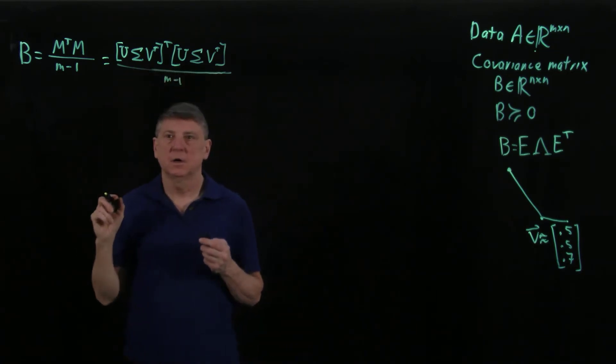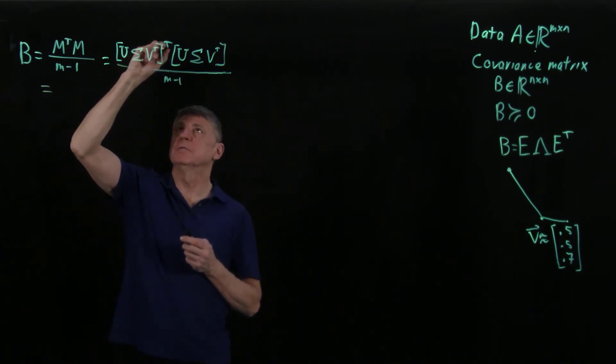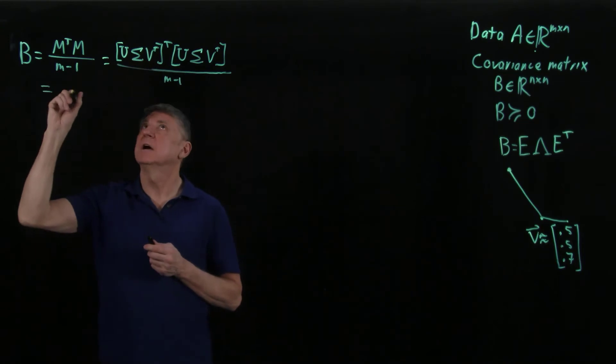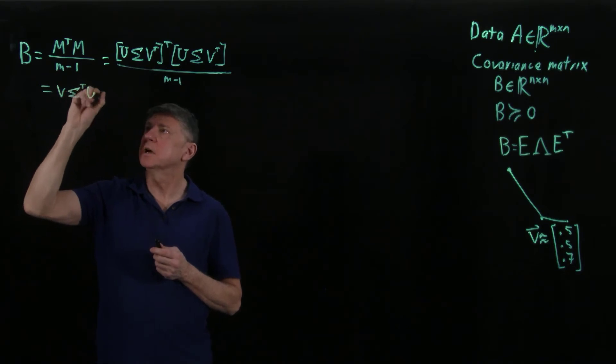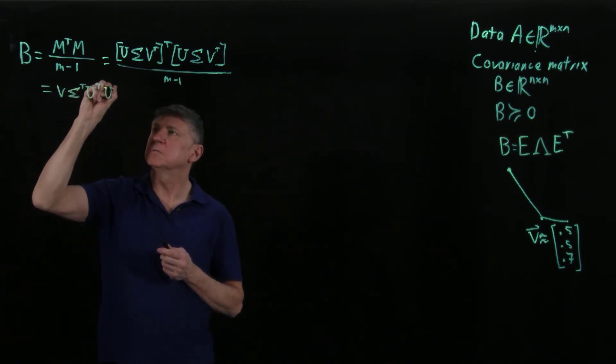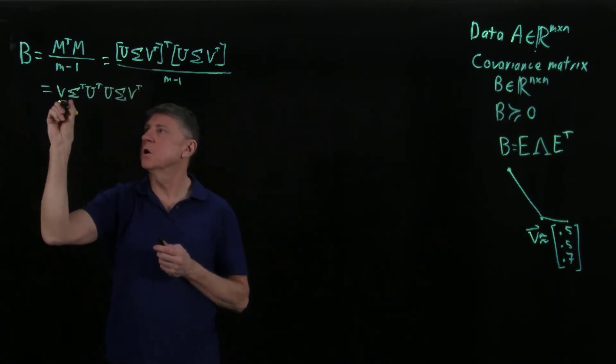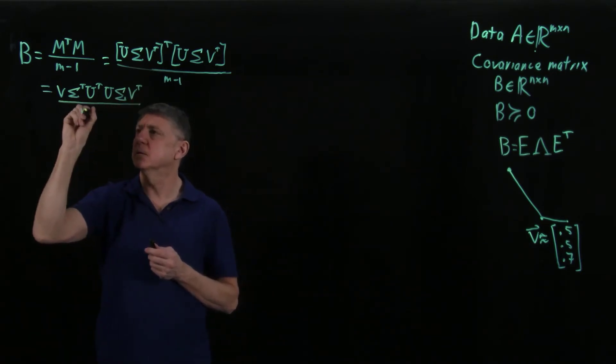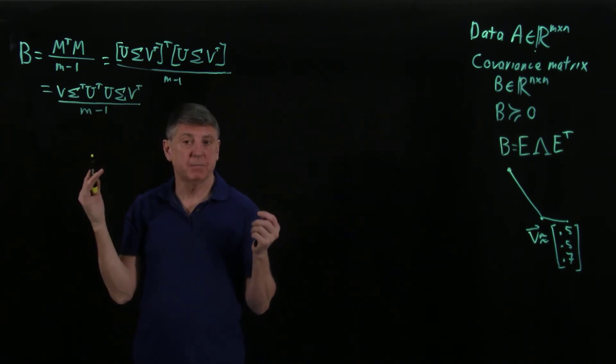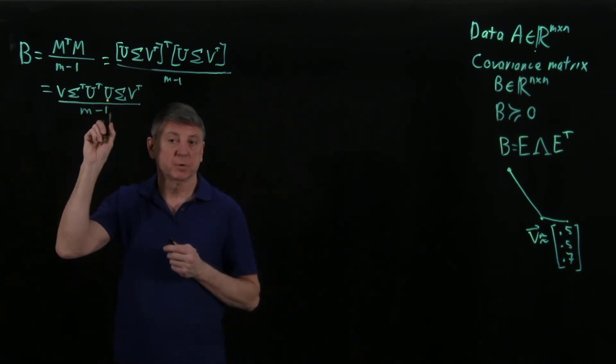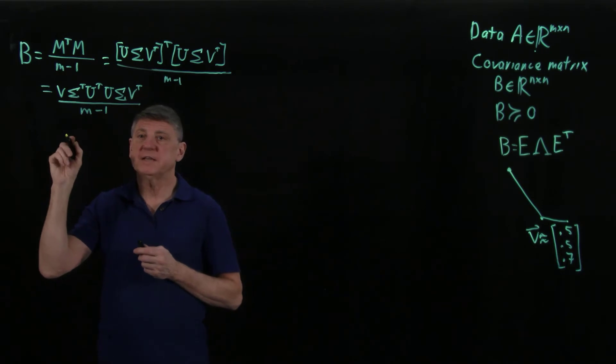And that would equal, when I do this in reverse, what I see is that is going to be v times sigma transpose times u transpose times u times sigma times v transpose, all divided by one less than the number of observations that we have. And u is an orthogonal matrix size m by m, and u transpose u will therefore equal the identity, and sigma transpose times the identity is sigma transpose, so I can represent that entire thing as.